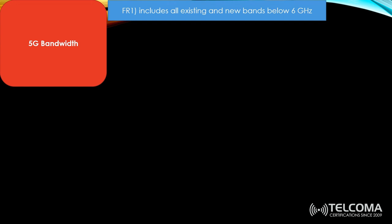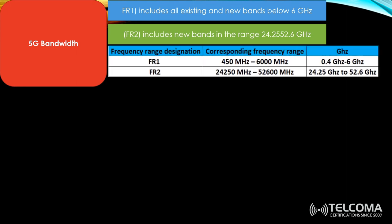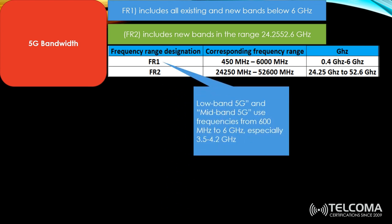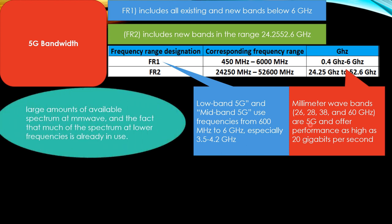5G bandwidths are defined as FR1 (Frequency Range 1), which includes all existing and new bands below 6 GHz from 450 MHz to 6 GHz, and FR2 (Frequency Range 2), which includes new bands from 24.2 GHz to 52 GHz — the millimeter wave range. FR1 is used for low-band and mid-band 5G use cases, while FR2 covers the 26, 28, 38, and 60 GHz bands. Large amounts of available spectrum exist in FR2.